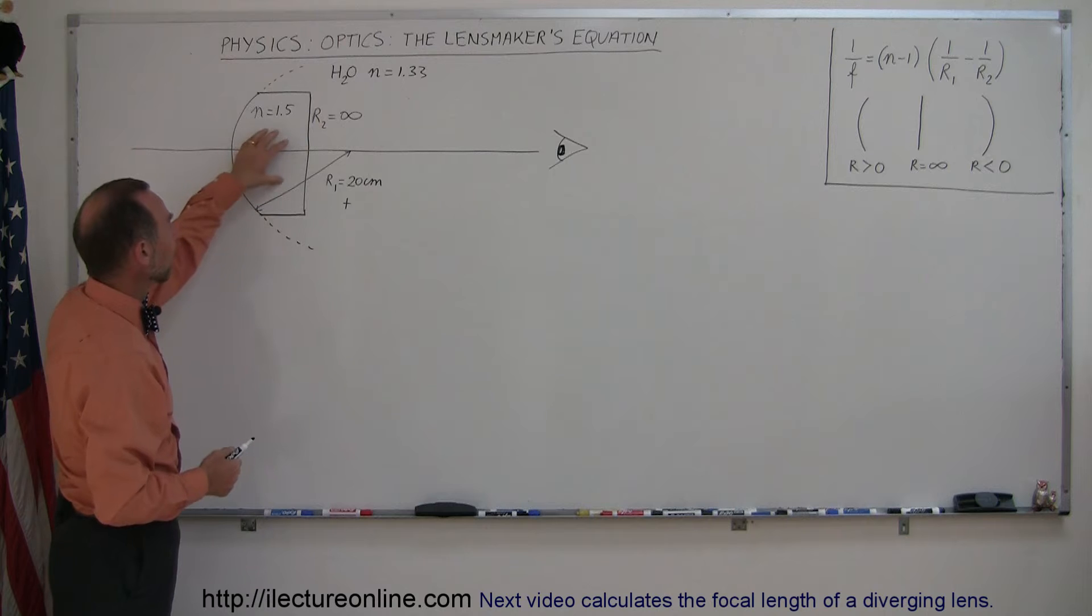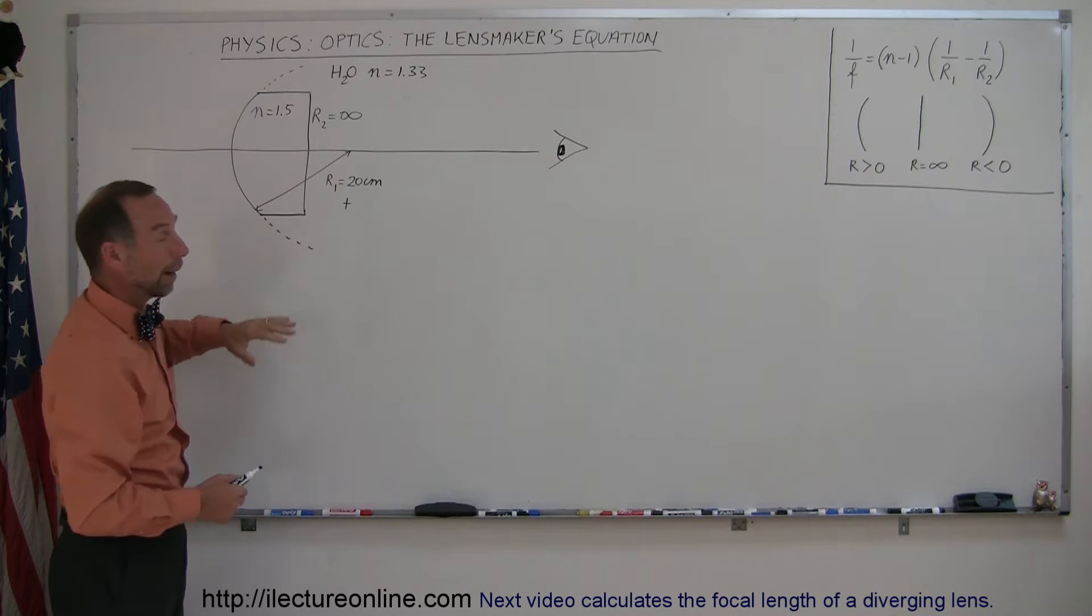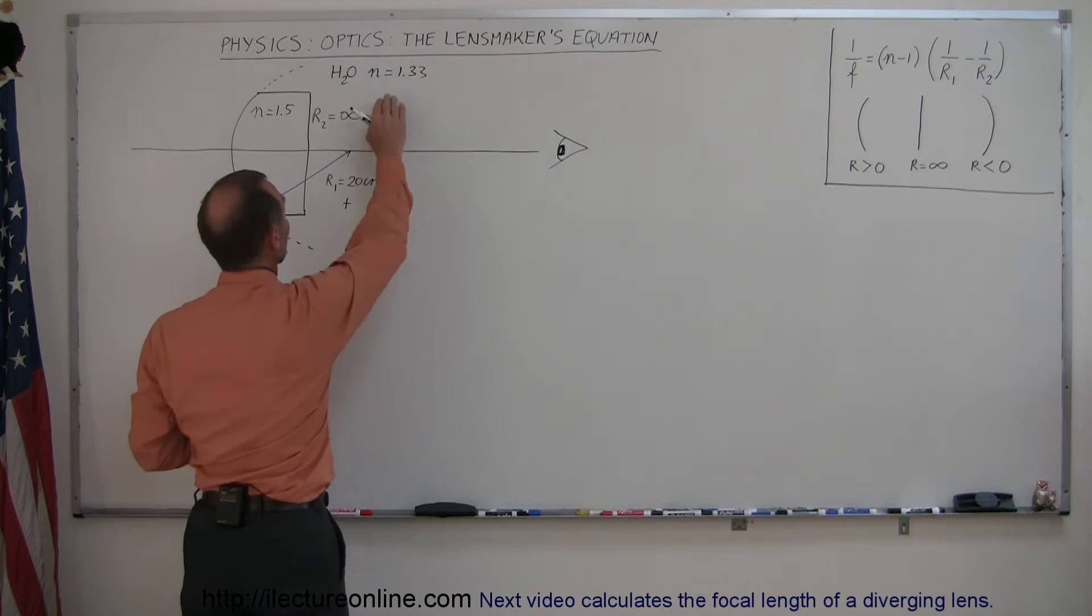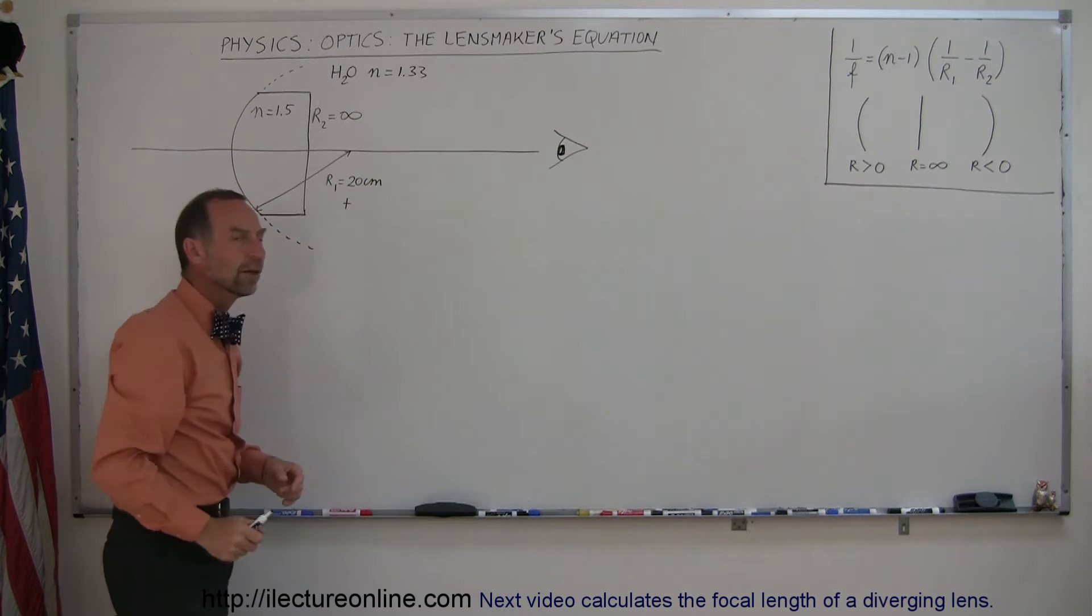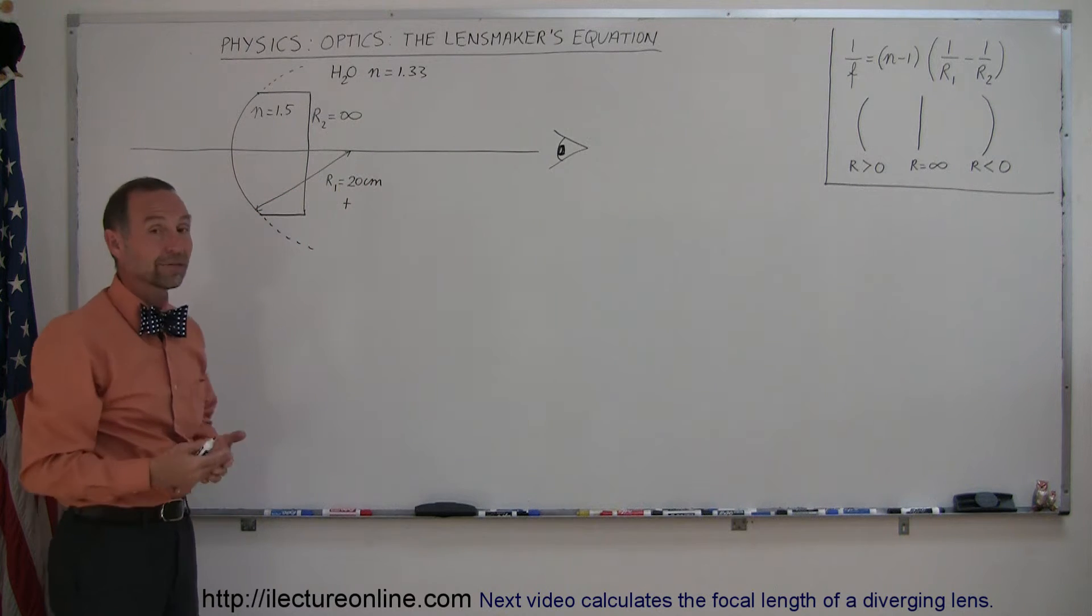Also, we place the lens, which has an index of refraction of 1.5, inside water rather than air. The outside index of refraction will be 1.33. How does that change things when we find the focal length?